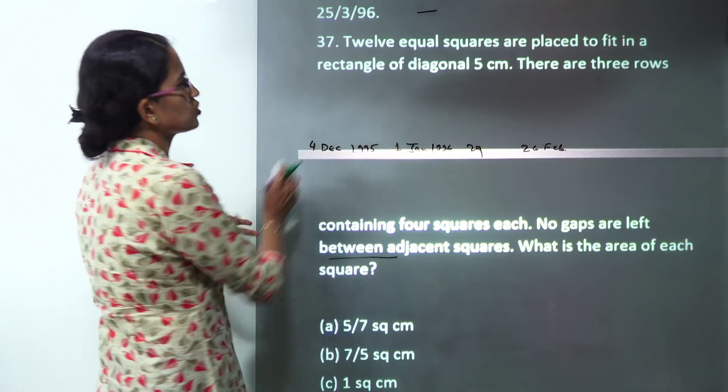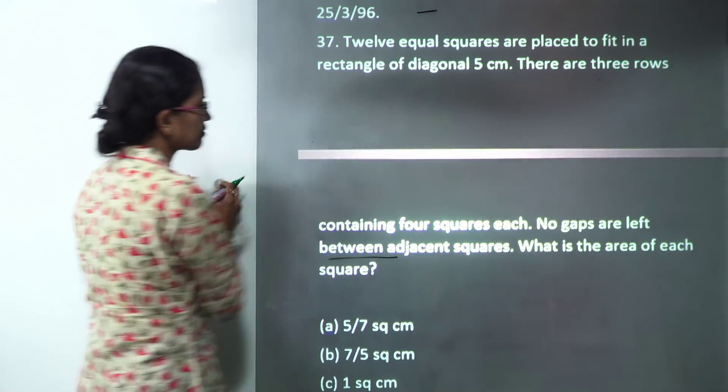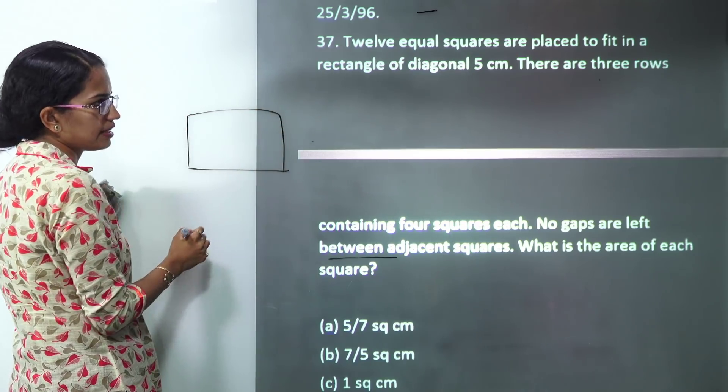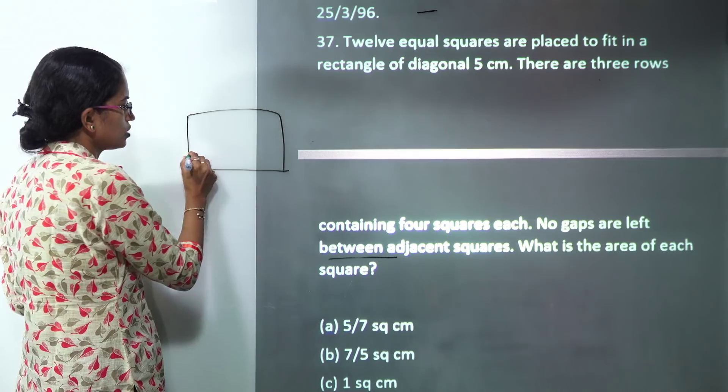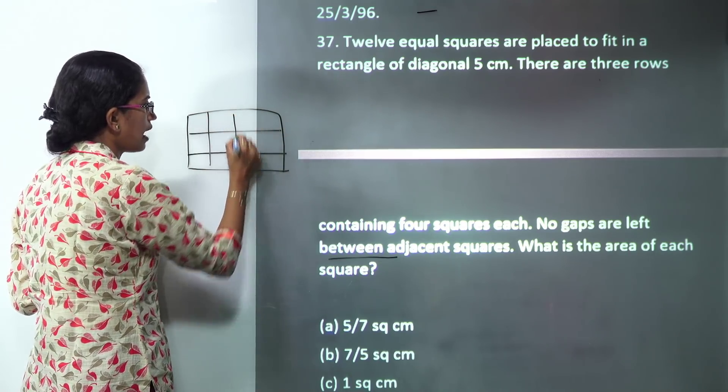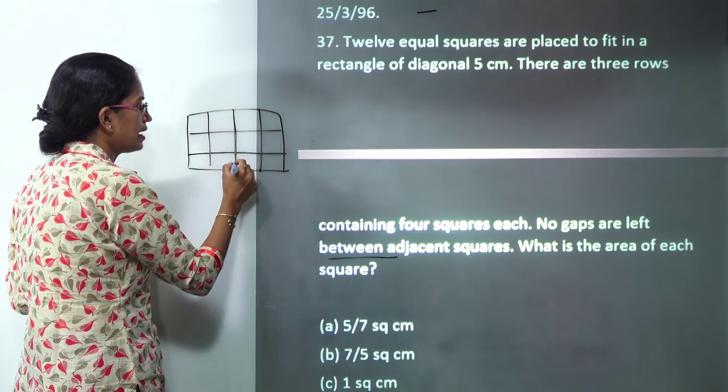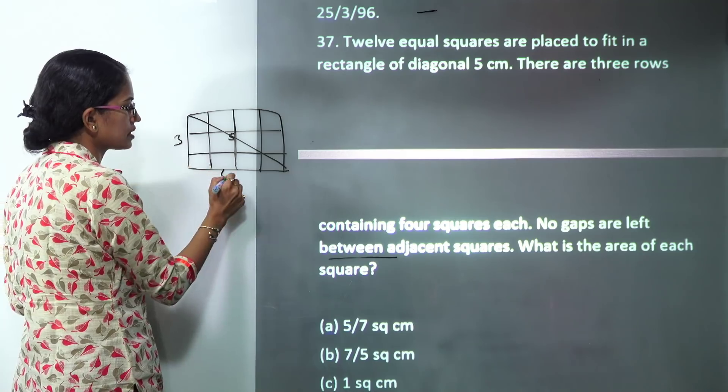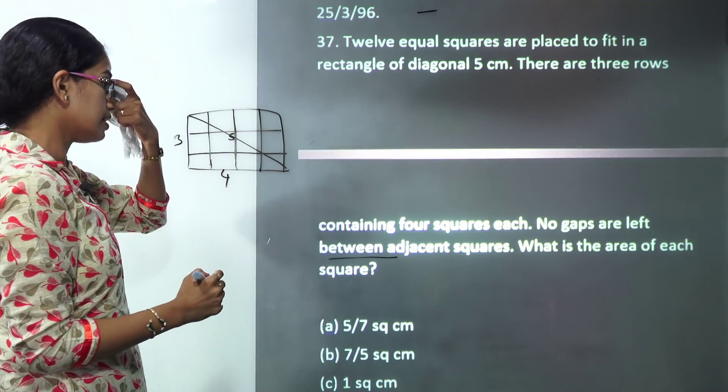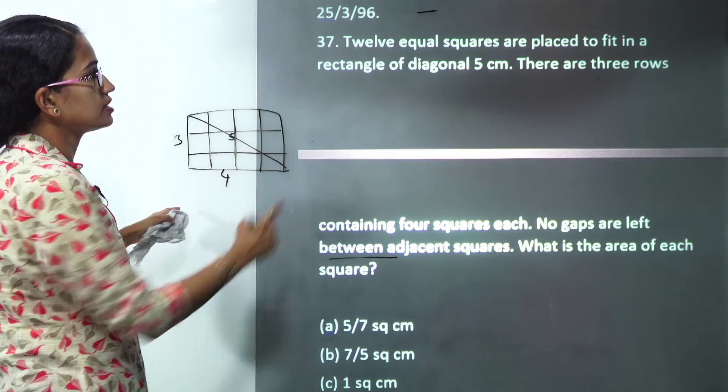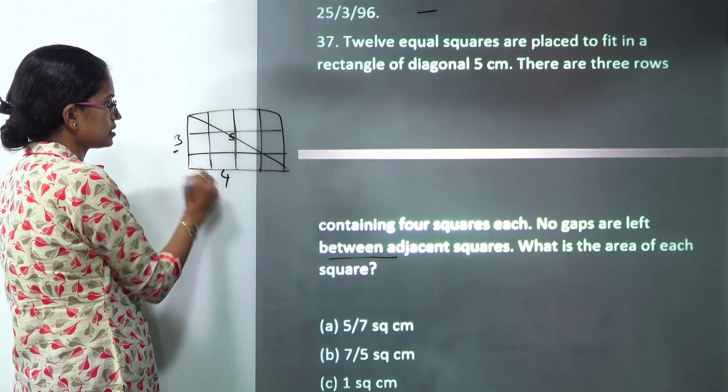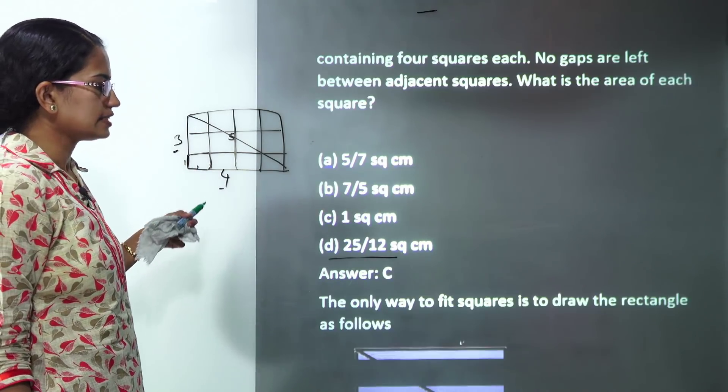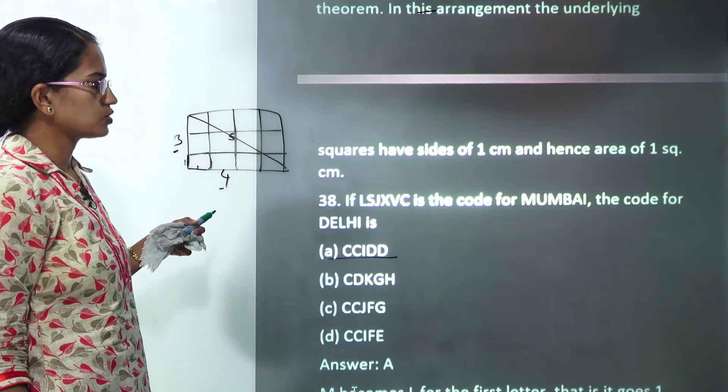The next is 12 equal squares are placed in a rectangle of diagonal 5. Now when I am placing 12 equal squares in a rectangle of diagonal 5 there are 3 rows containing 4 squares. So I have 3 rows and each of those have 4 squares and the diagonal is 5. So I can say this is a right angle triangle. So this would be 3 and this would be 4. What would be the area of each square? Since there are 12 equal squares and this is 5 cm, this is 3, this is 4, each block here would be 1 cm by 1 cm. So the area of each would be 1 cm square.